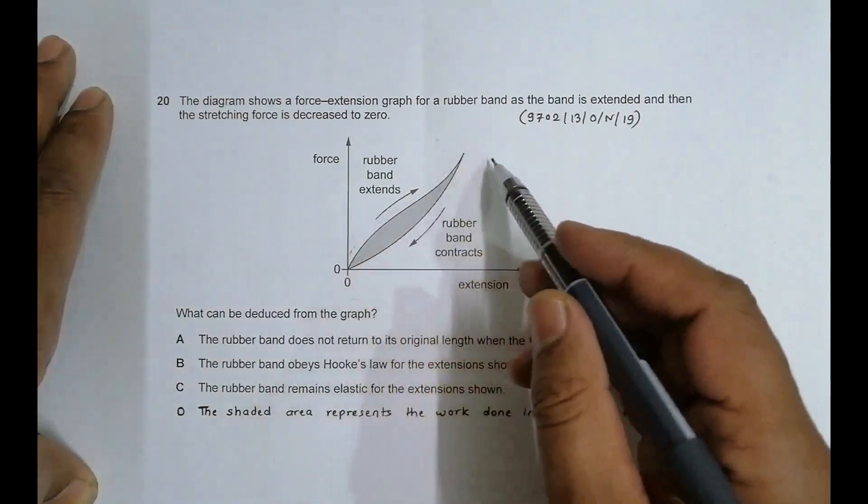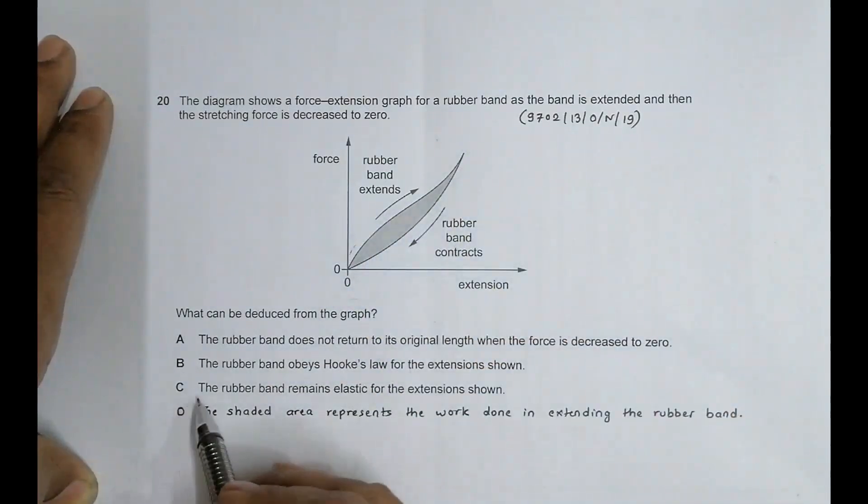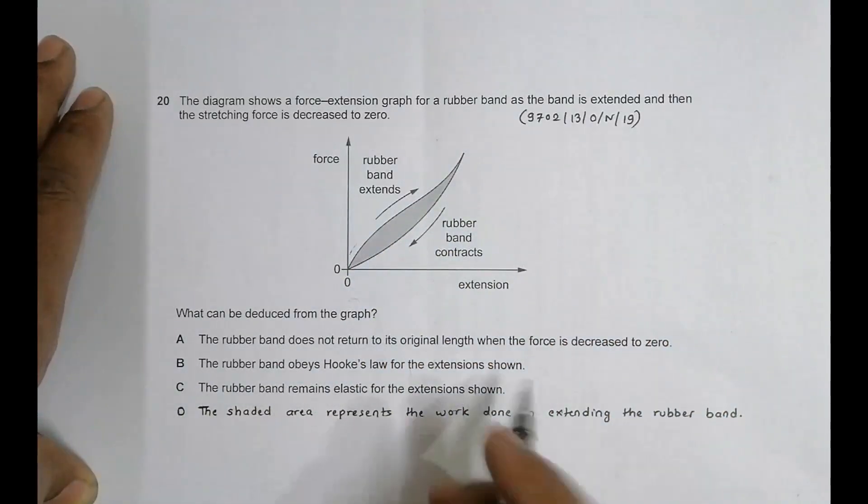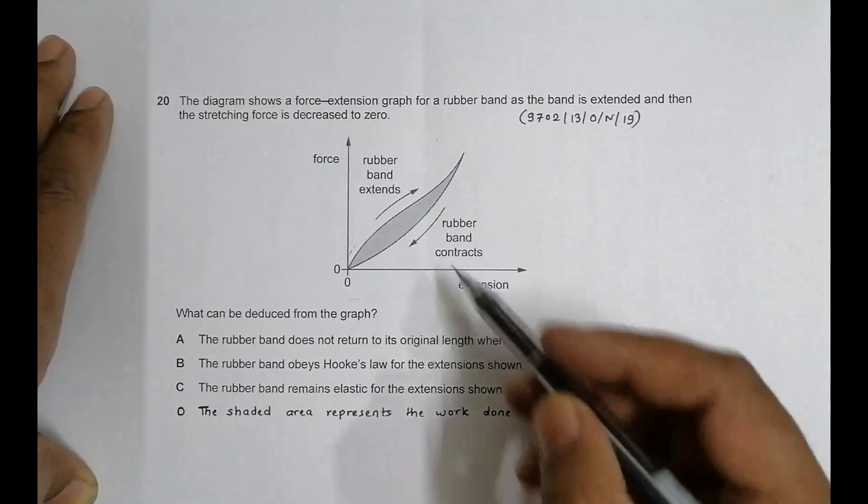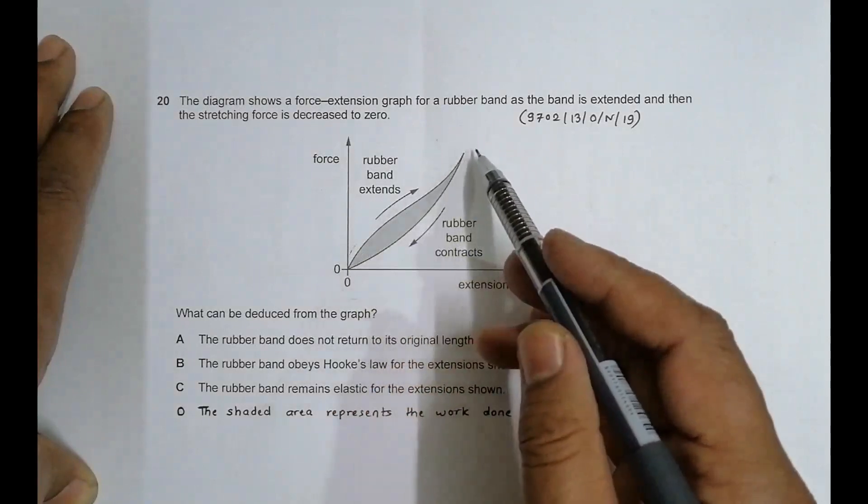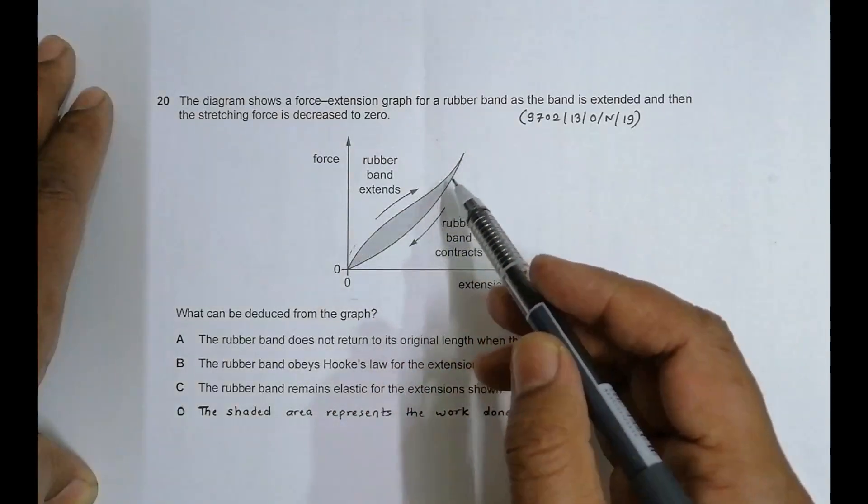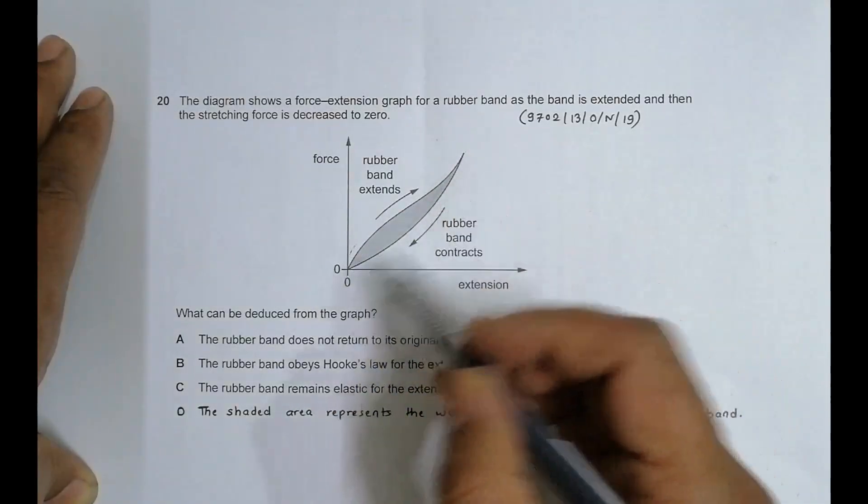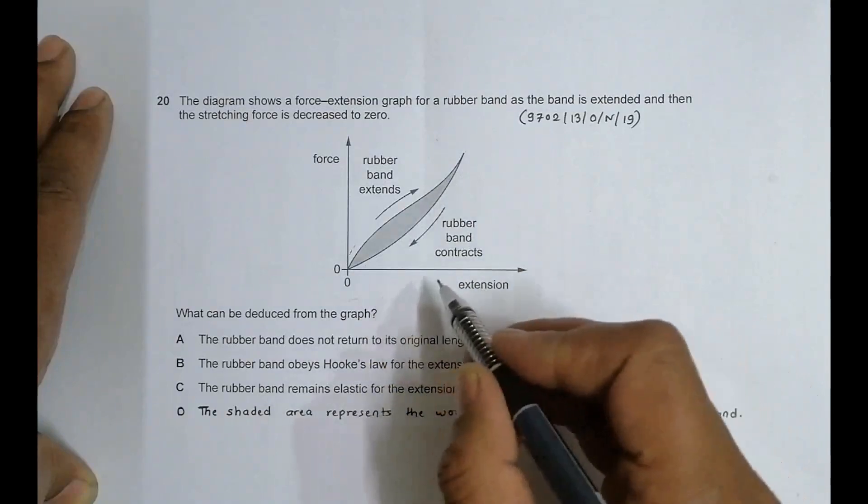Number C: The rubber band remains elastic for the extensions shown. This seems to be true because as we increase the force and then change the force to zero, the extension becomes zero.